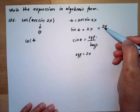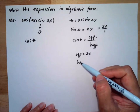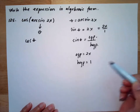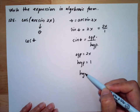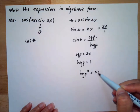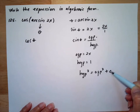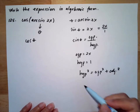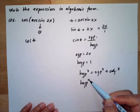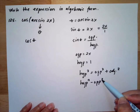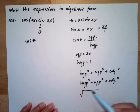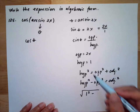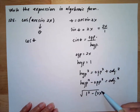Since there's no denominator, the denominator is equal to 1, so our hypotenuse is equal to 1. To solve for the adjacent side, we use: hypotenuse squared equals opposite squared plus adjacent squared. So adjacent squared equals hypotenuse squared minus opposite squared, which is 1 squared minus (2x) squared.